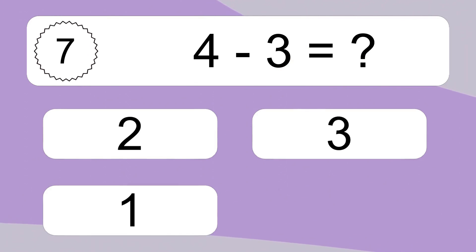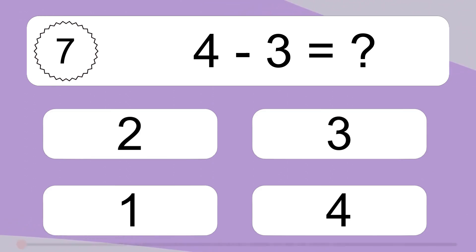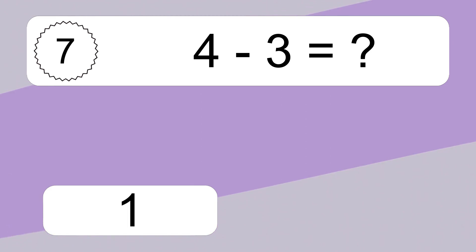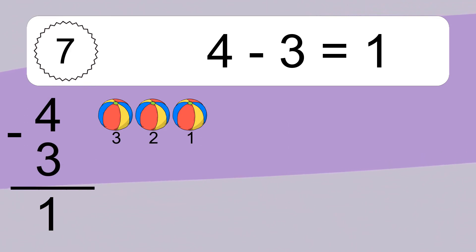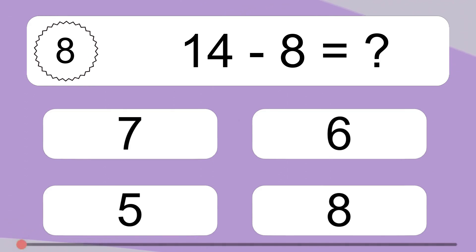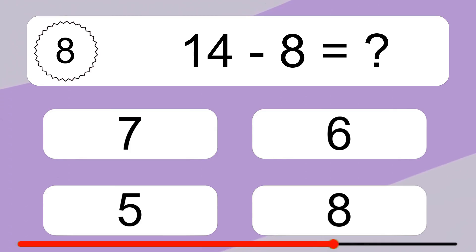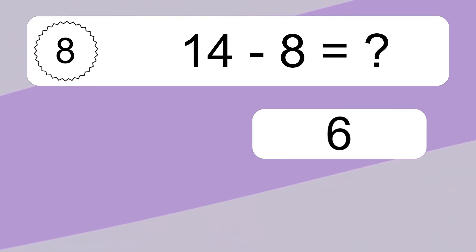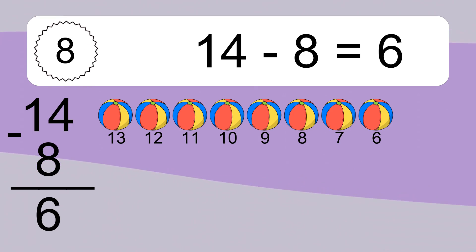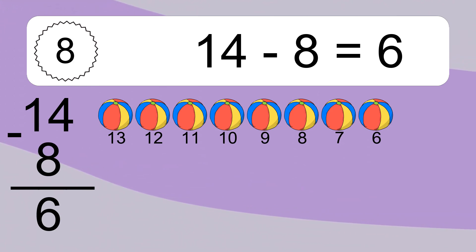Four minus three equals what? Four minus three equals one. Let's count it: three. Fourteen minus eight equals what? Fourteen minus eight equals six. Let's count it: thirteen, twelve, eleven, ten, nine, eight, seven, six.